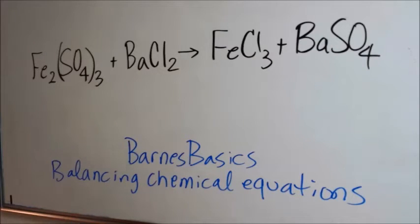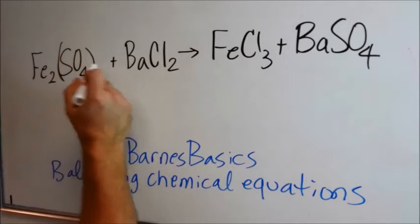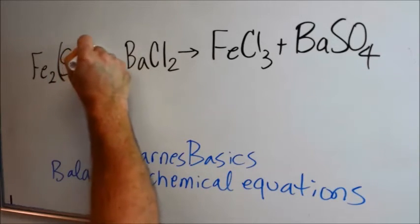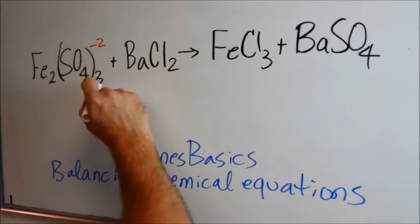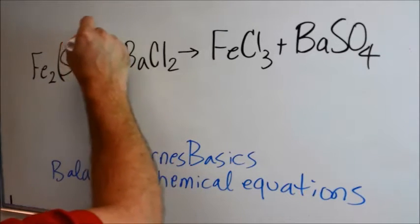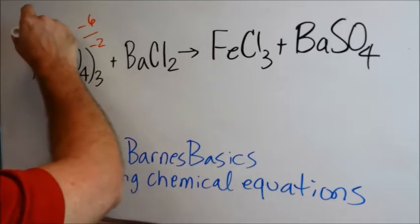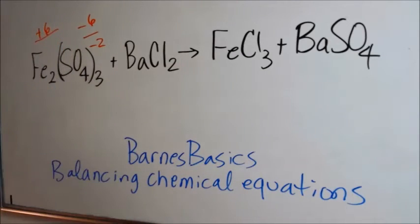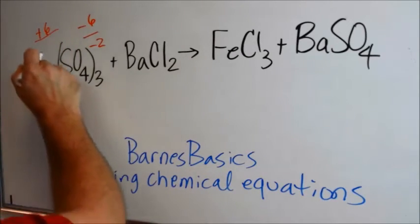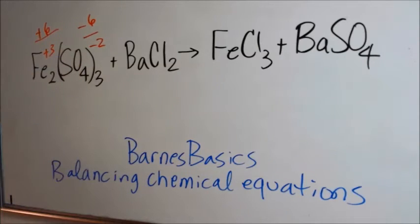We know from memory that sulfate is negative 2. So if there are three of them, 3 times negative 2 is negative 6. That would mean that the irons would have to total a plus 6 to make neutrals. So 2 times plus 3 would be plus 6.